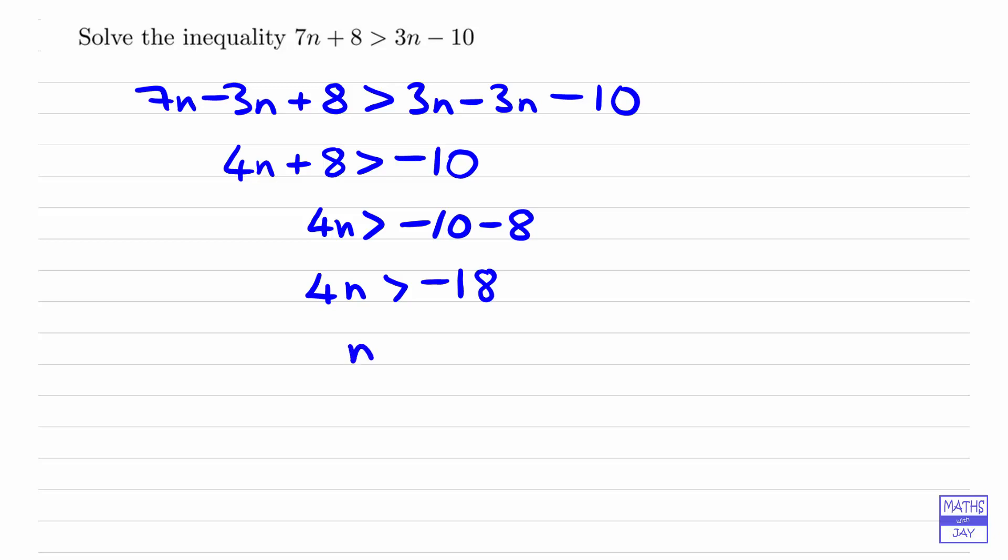So dividing both sides by 4, so that's a positive number, so we've got no problems with doing that. So that gives us n is greater than minus 4.5.